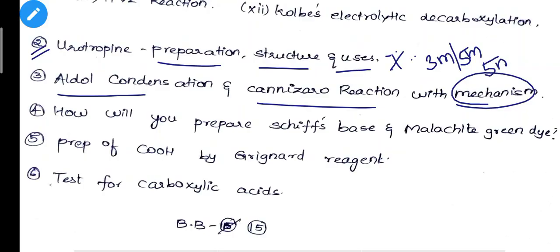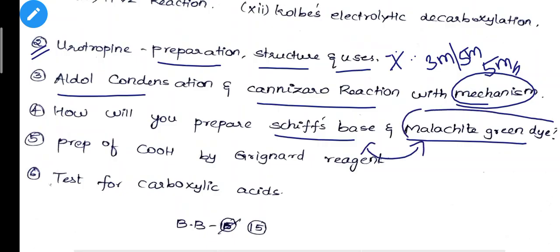Next: how will you prepare Schiff's Base and Malachite Green dye? These are two reactions — easy reactions, two interconnected ones. This is a tertiary Malachite Green dye reaction. We will react tertiary, and Schiff's Base is primary. That is the difference. You will find one question on this.